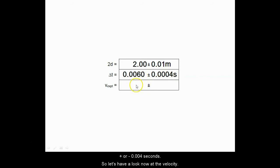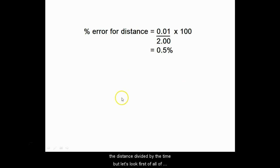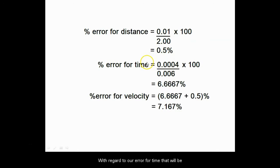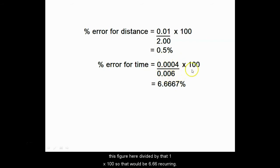Let's have a look now at the velocity. That velocity of course will be the distance divided by the time. But let's look first of all at the uncertainty. What we've got to do here, because we're involving a division, is work in terms of percentage uncertainty. The percentage uncertainty for the distance is our uncertainty here divided by the total length multiplied by 100, so that gives us 0.5 percent. With regard to our error for time, that will be this figure here divided by that one times 100, so that would be 6.66 recurring.